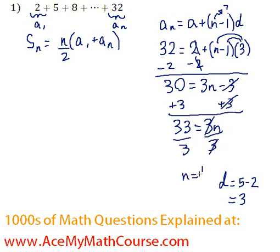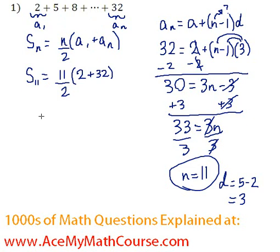And n is just 11, which is 33 over 3. Great. Now we can finally do our sum formula. So we know that we're adding 11 terms. We're going to get 11 over 2 times 2 plus 32. So 11 over 2 times 34.